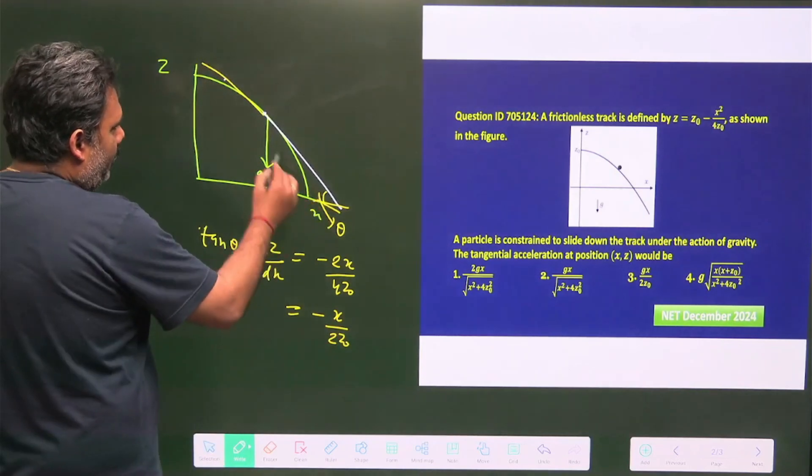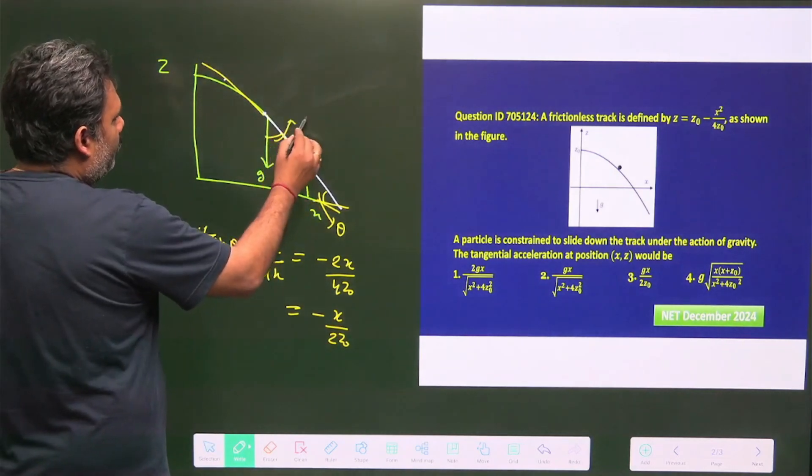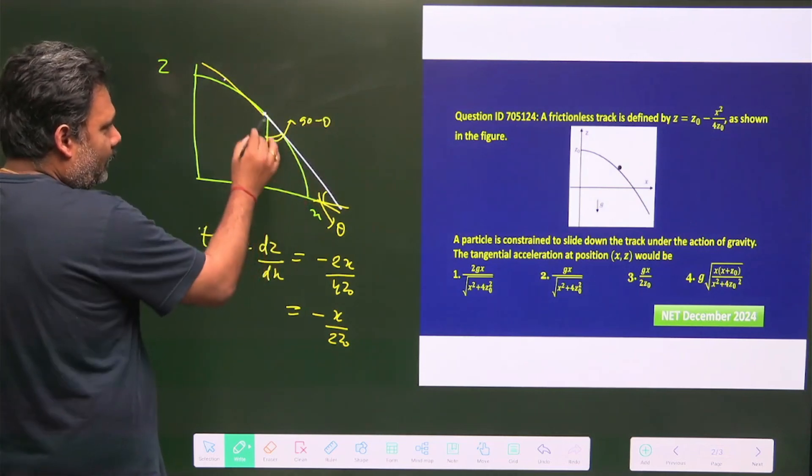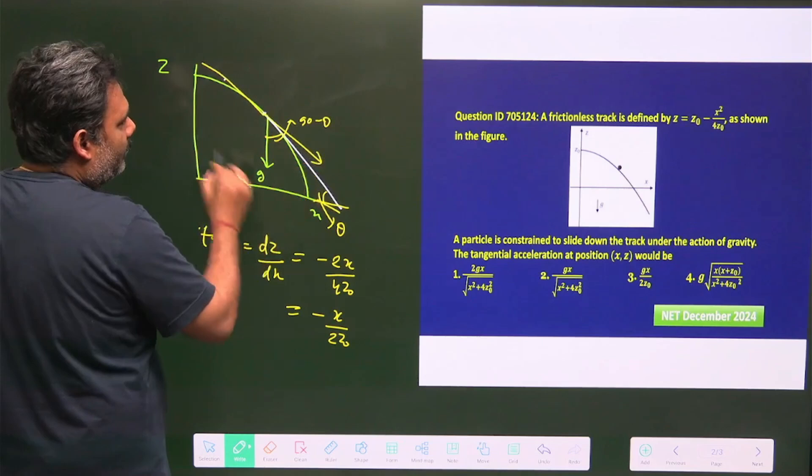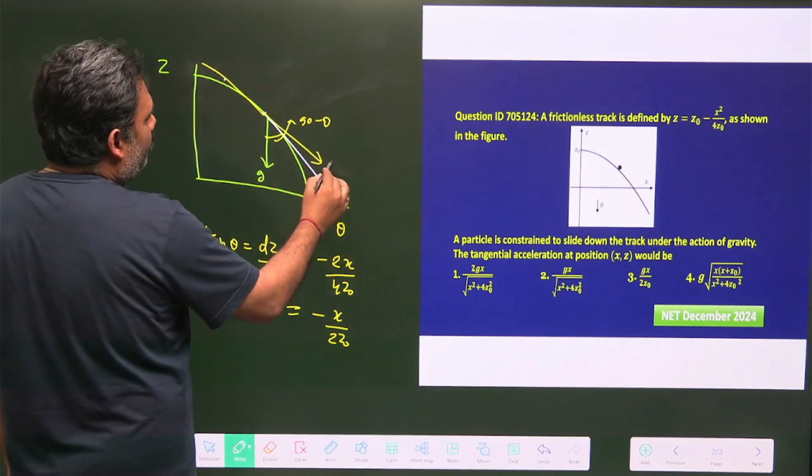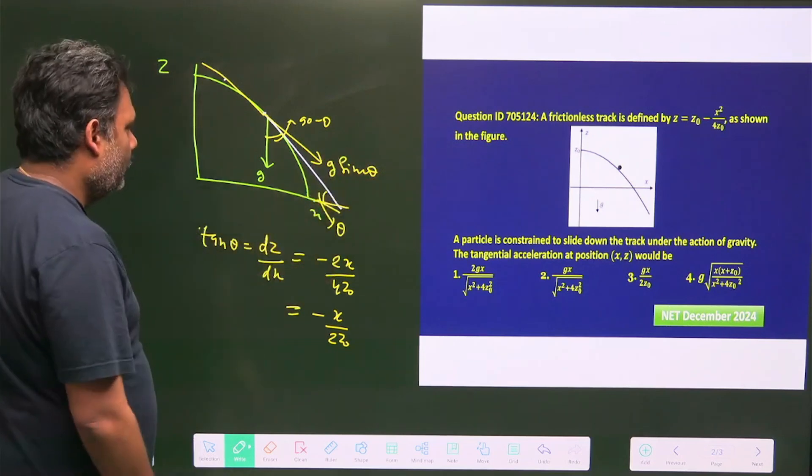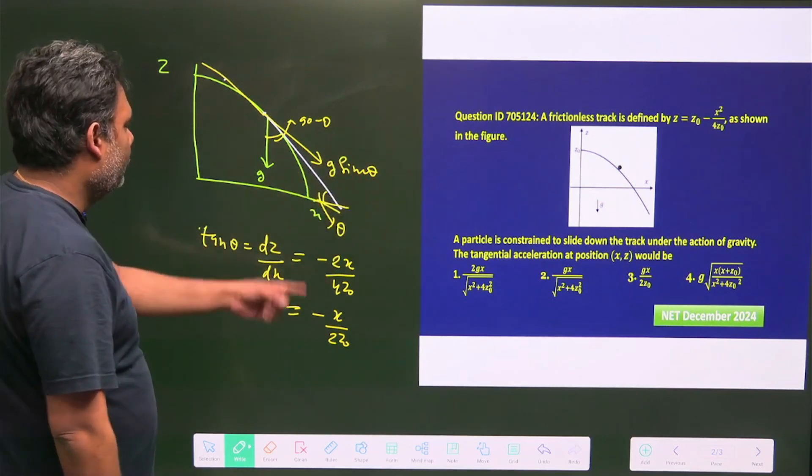And what will be if this angle is theta then this angle is 100 percent 90 minus theta. So the component of acceleration g in this direction is basically g sin theta.